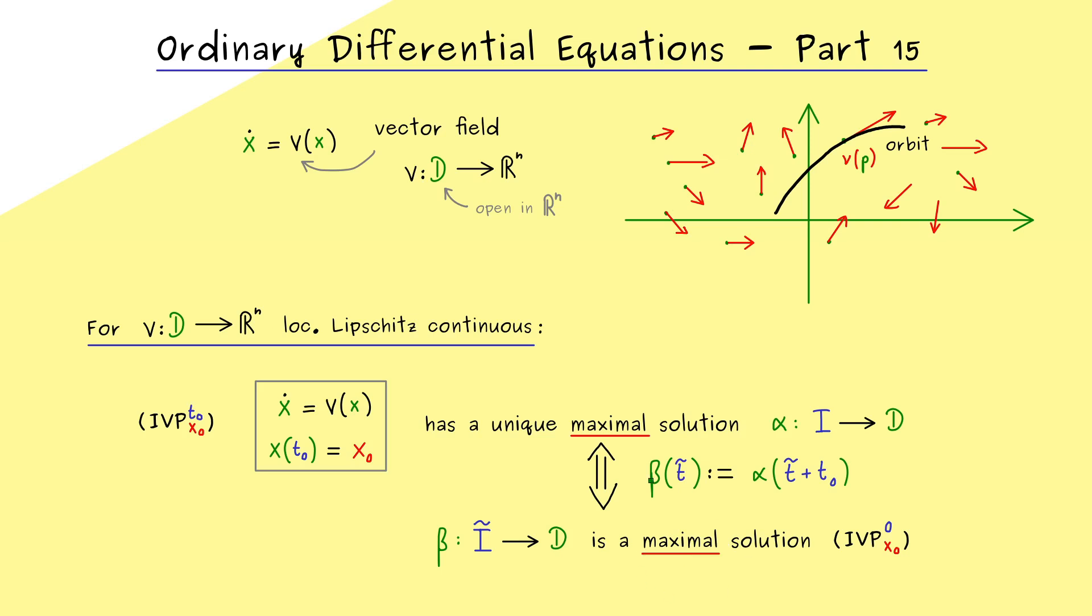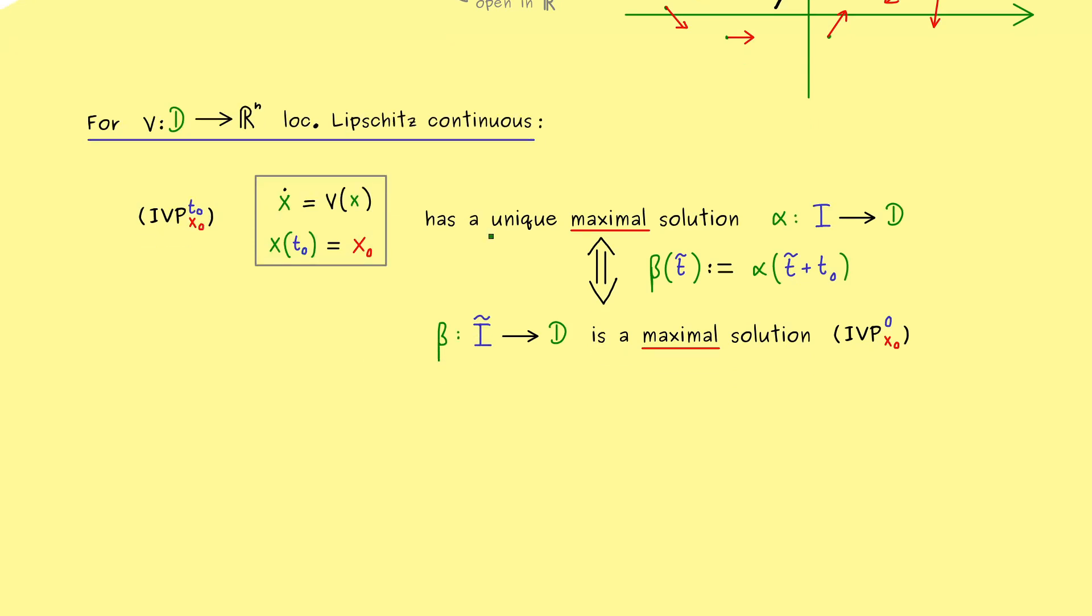Putting it differently, if we have the maximal solution for the time starting point 0, we have it for any other starting point as well. This is important to know, because the orbit in this picture here does not represent the time variable anymore. Therefore, it is important to know that this does not change our uniqueness result at all.